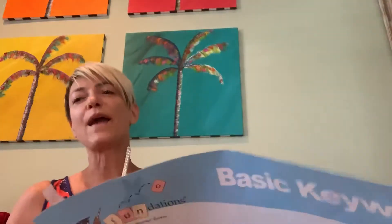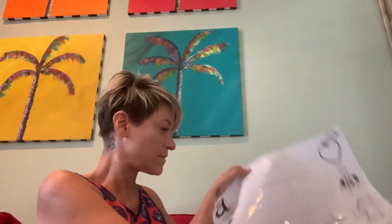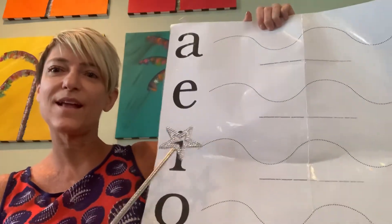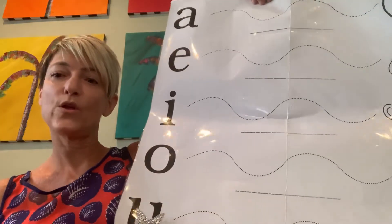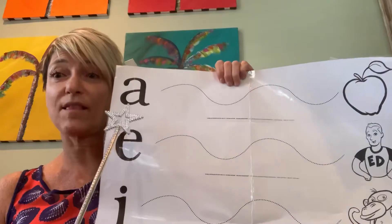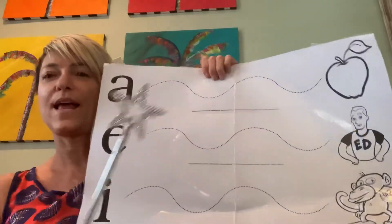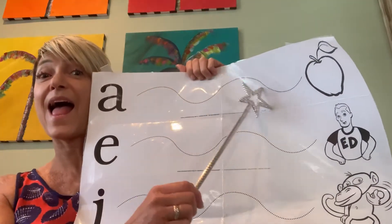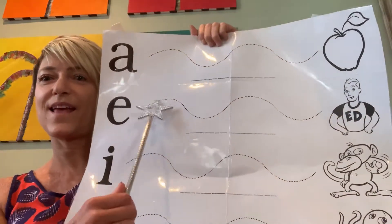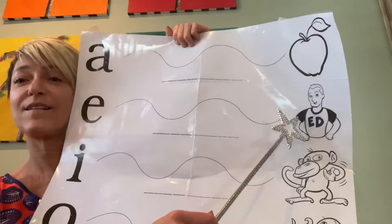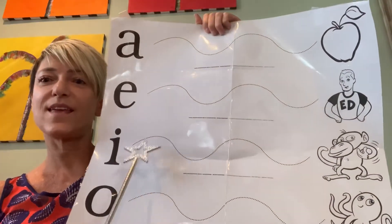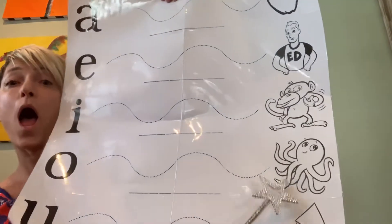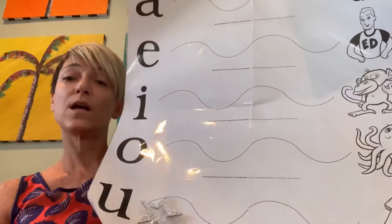And before we work, let me do our vowels. We have five of them: A, E, I, O, U. We're going to say the letter, make its sound, and say the picture. A - apple. E - Ed. I - itch. O - octopus. U - up.